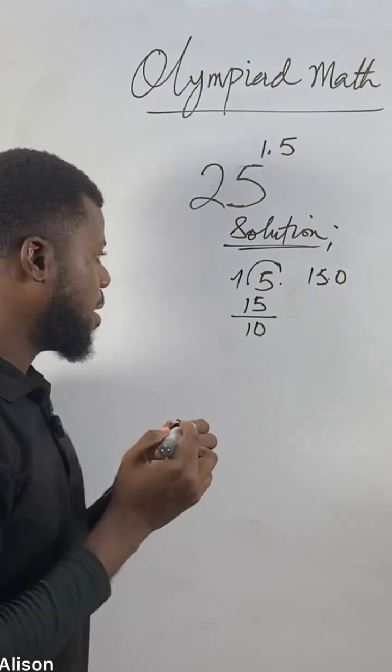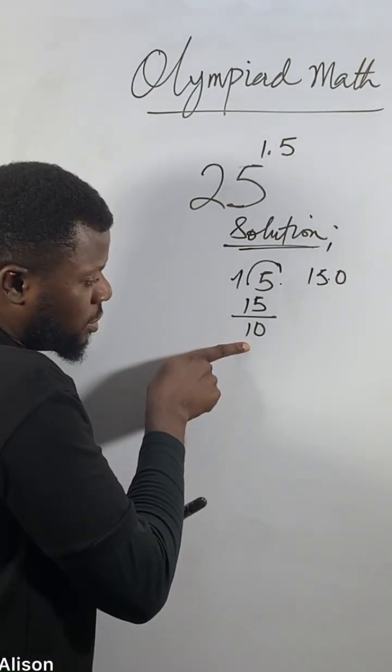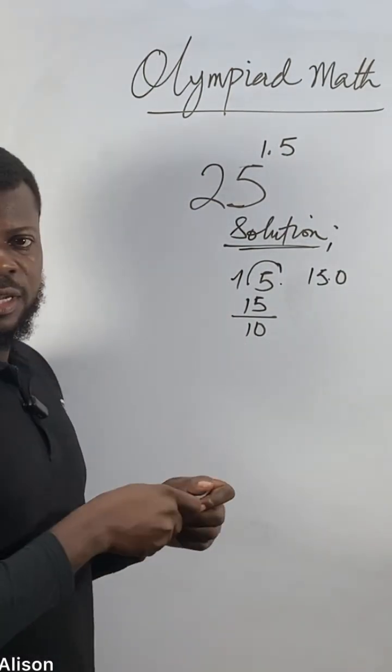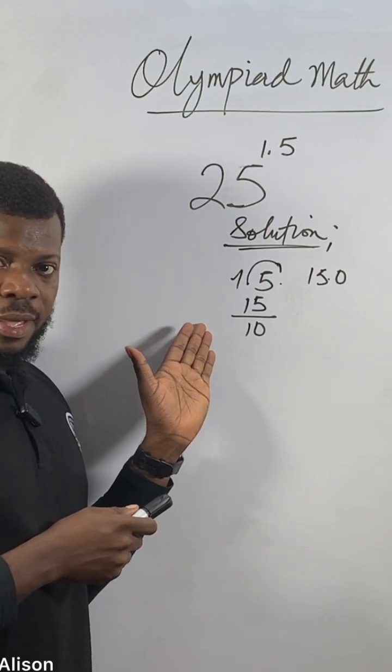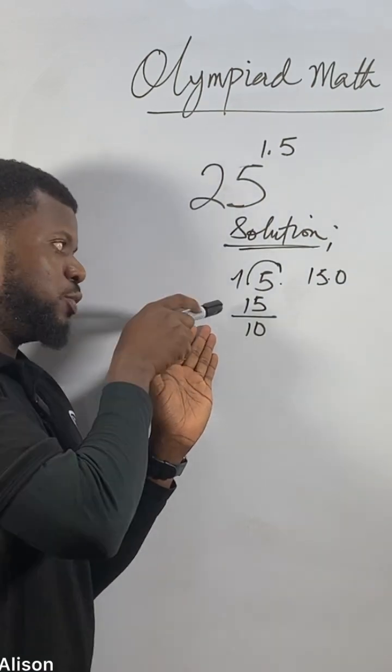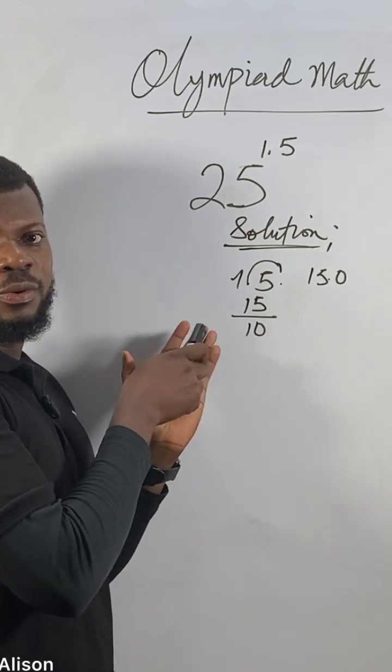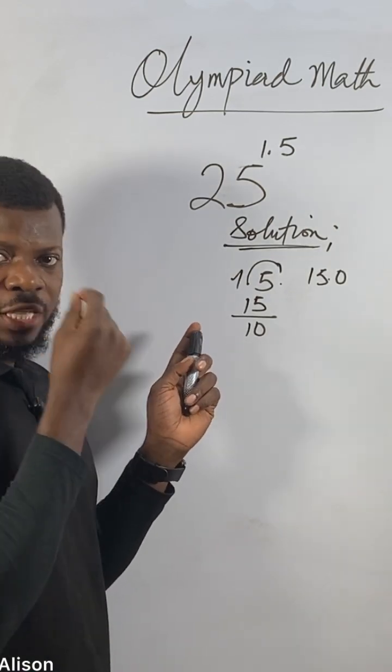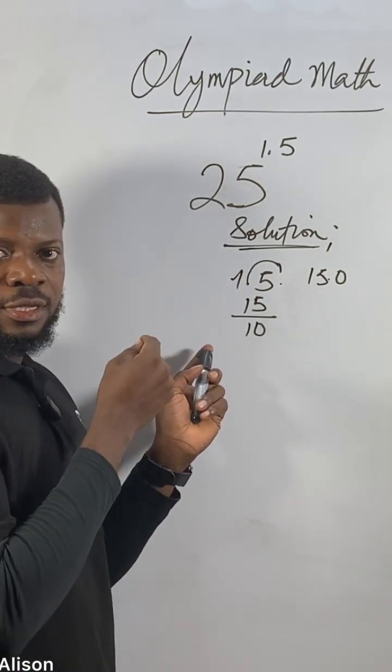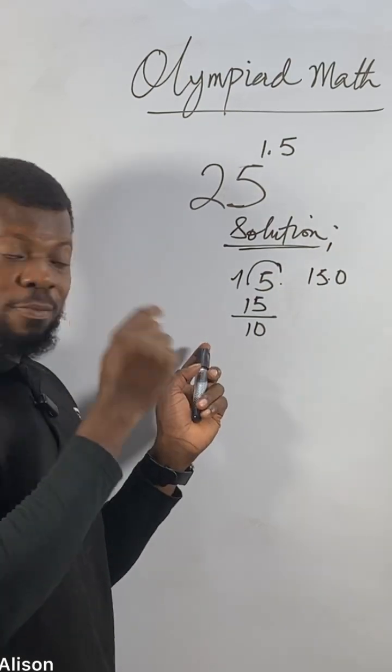So now if you get 15 over 10, you can still reduce this number. You need to find one number that goes inside 15 and still goes inside 10. Put down in the comment section - what number goes inside 15 and still goes inside 10?